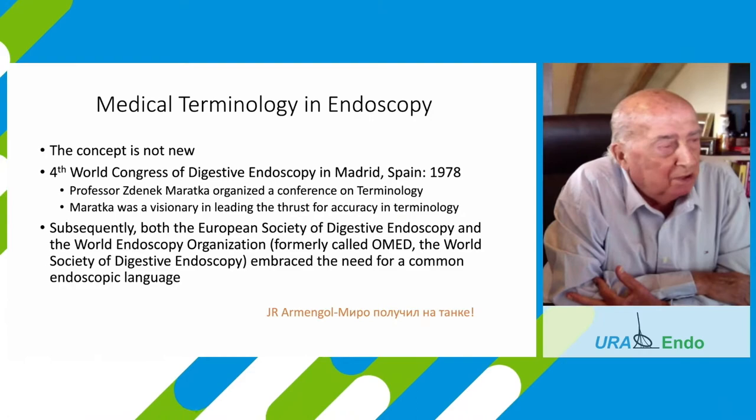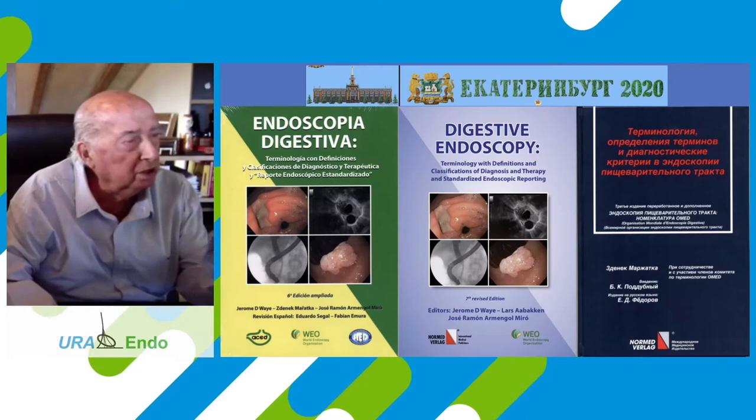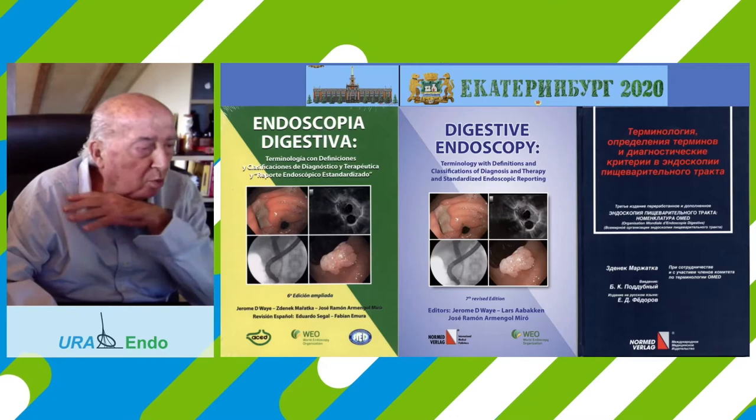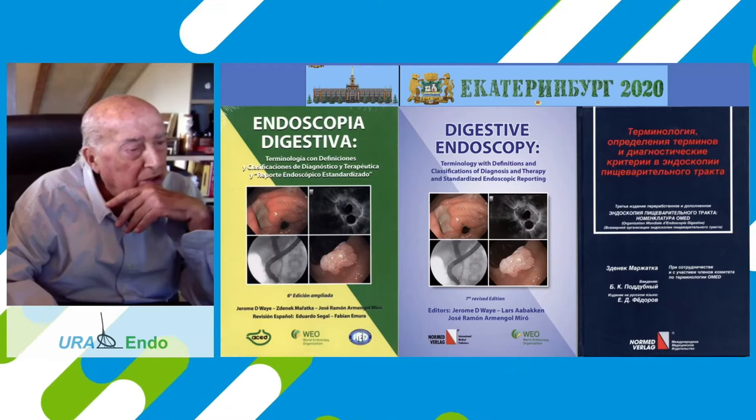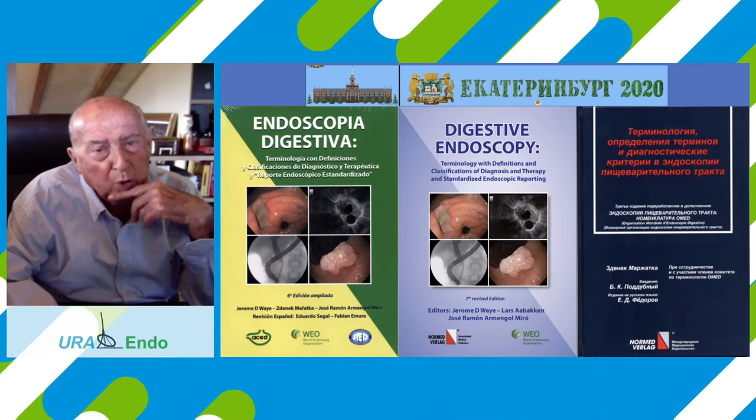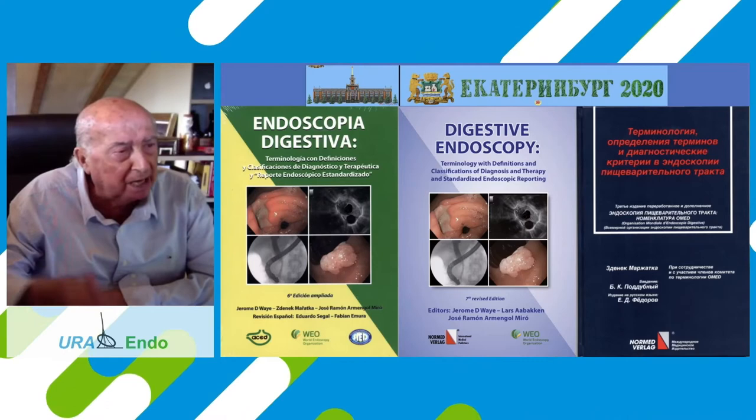These are three books. The first book in the middle is the seventh revised edition by Jerome Way, Lars Arbaken and myself. It's the revision for South America. And finally, the new book for Russian — this is important — but it has also been translated into Chinese, Japanese, Spanish, Italian, German, and English. This is very important.